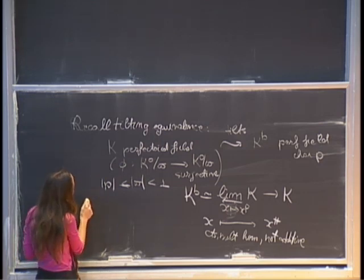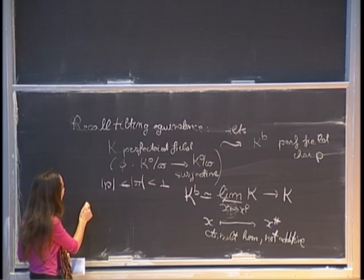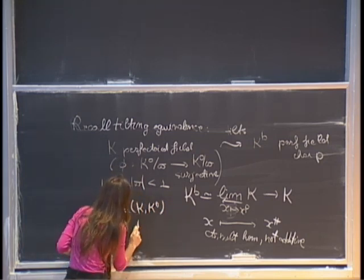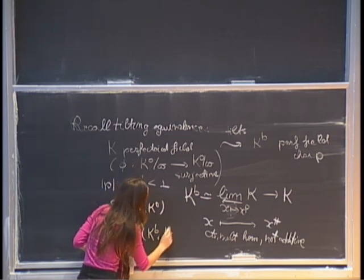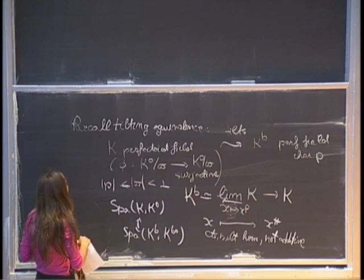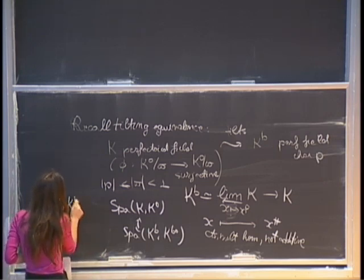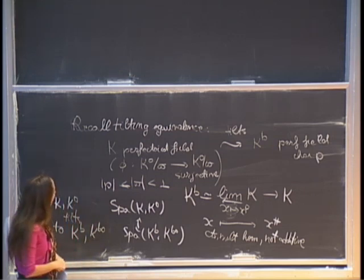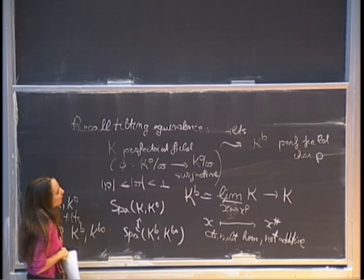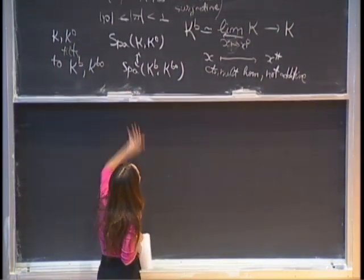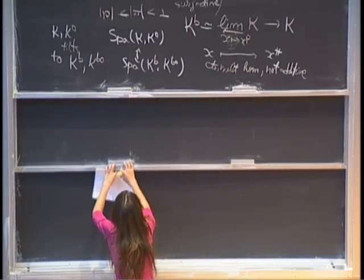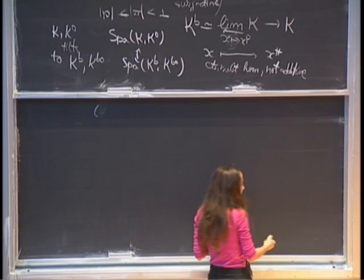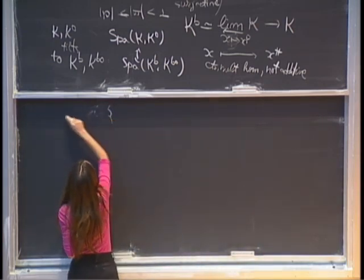The idea is to identify topological spaces. In this case, Spa(k-circ) is just one point, but it gets identified with k-flat, k-flat-circ, in such a way that the structure sheaves are identified under tilting. So k-circ tilts to k-flat, k-flat-circ. There's something on topological spaces, structure sheaves, and also étale sites. The baby case of almost purity says that finite étale algebras over k — or rather finite extensions — have an equivalence of categories.